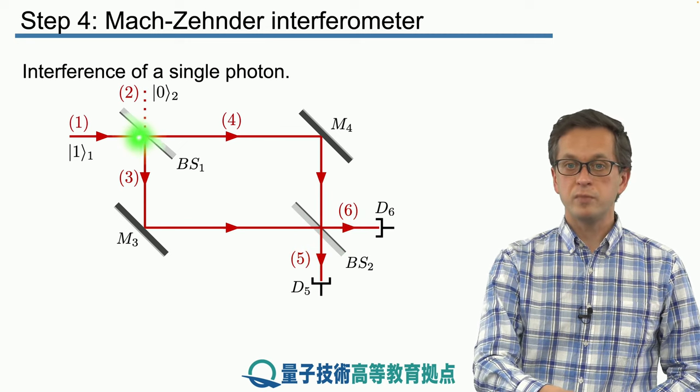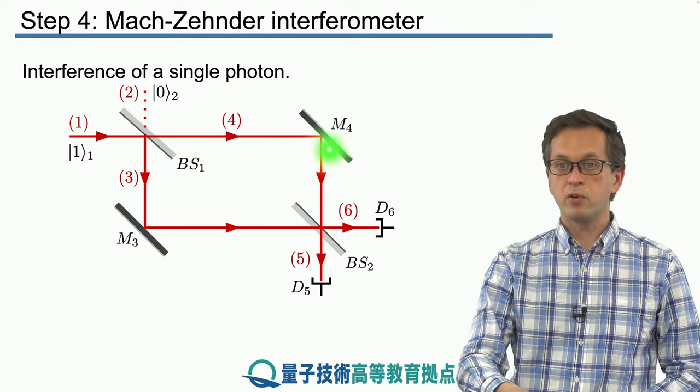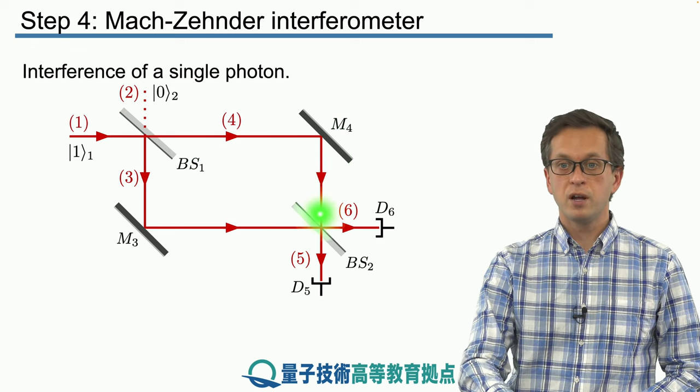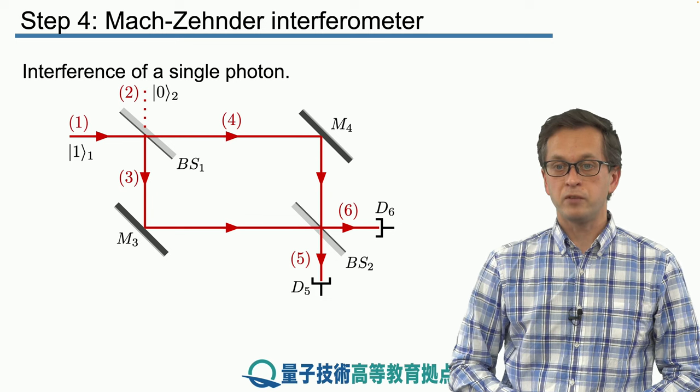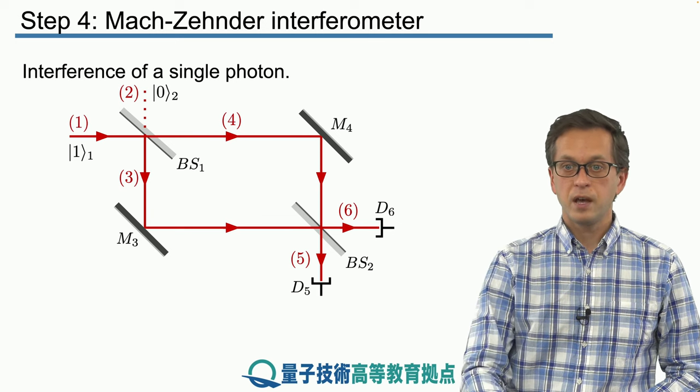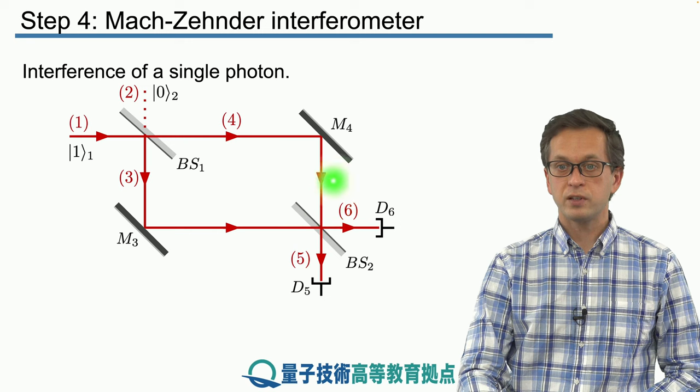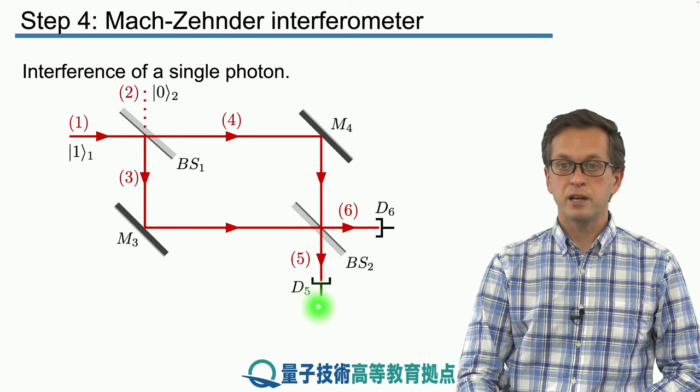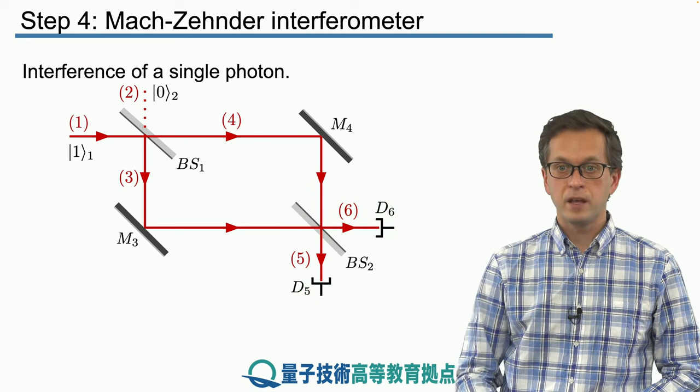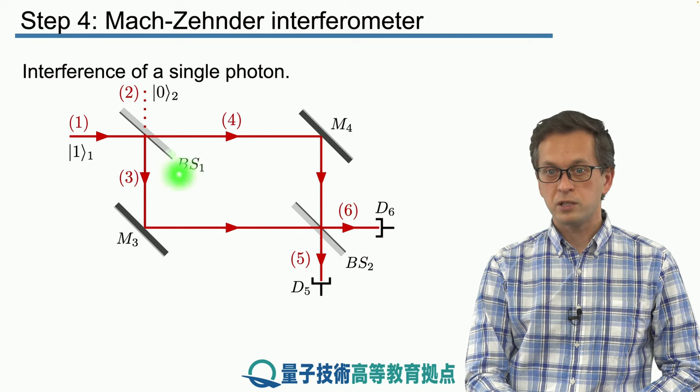Or when it gets transmitted, it follows path 4, gets reflected off mirror 4 and interferes with path 3 at beam splitter 2. And we've got output modes 5 and 6 leading to detectors D5 and D6.